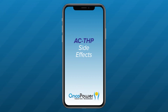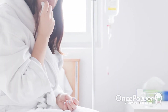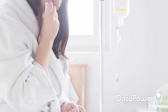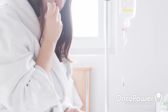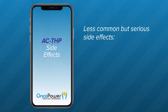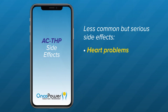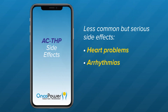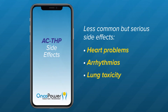What are the side effects from ACTHP treatment? Different medicines have different side effects for different people, and you may not experience every side effect. Less common but serious side effects include heart problems — your doctor will obtain a baseline echocardiogram to monitor cardiac function before starting treatment and periodically as necessary. Arrhythmias: you may experience persistent palpitations or heart racing. Lung toxicity: report to your doctor right away if you have shortness of breath, cough, or difficulty breathing, usually caused by Herceptin.